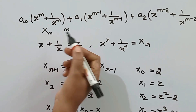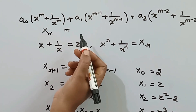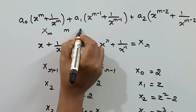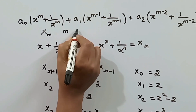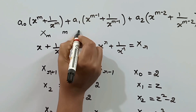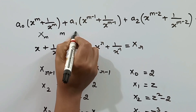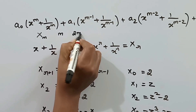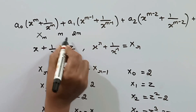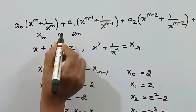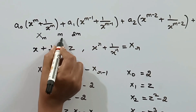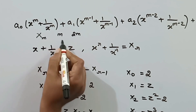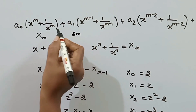To summarize: we have a reciprocal equation of even degree with like signs in standard form, with highest power 2m. By the substitution in terms of z, we convert and reduce the dimension from 2m to m. This is how we depress a reciprocal equation to half its degree.